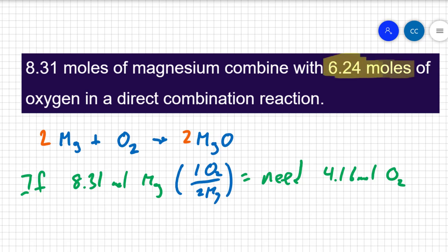Yeah. I have 6.24 moles of oxygen. I have more oxygen than I actually need. That means that when this reaction is done, there is going to be an excess of oxygen. There's going to be unreacted oxygen when this reaction completes. I don't need all of the oxygen that I'm given.